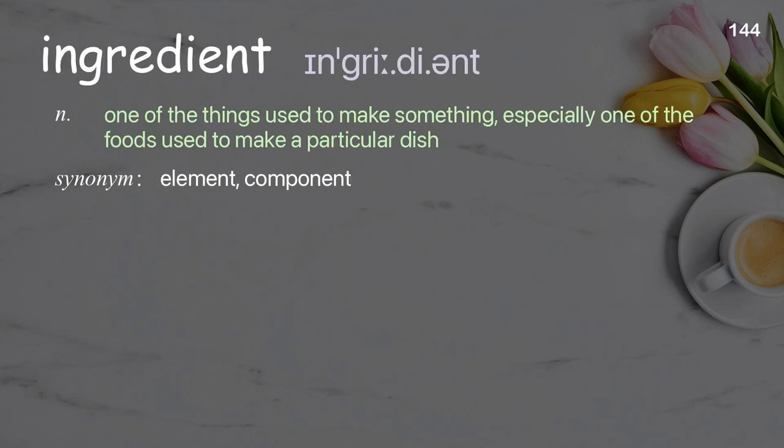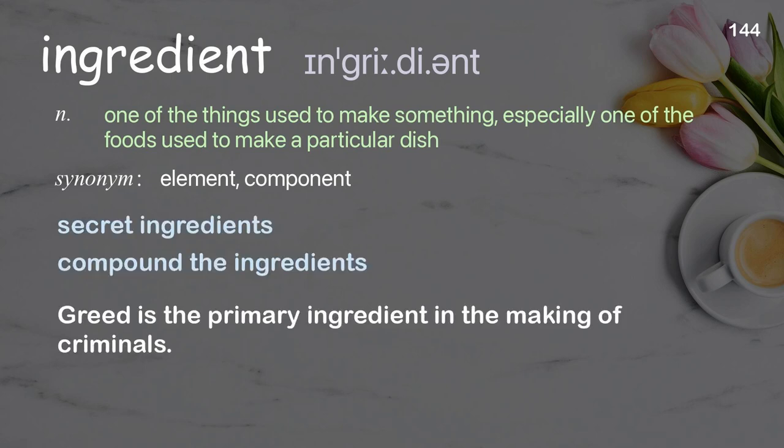Ingredient: one of the things used to make something, especially one of the foods used to make a particular dish. Examples: secret ingredients, compound the ingredients. Greed is the primary ingredient in the making of criminals.